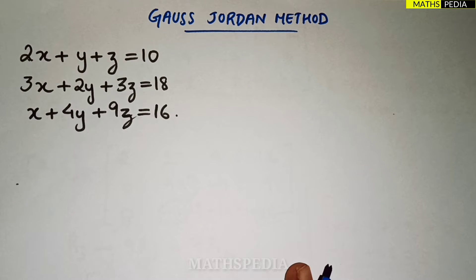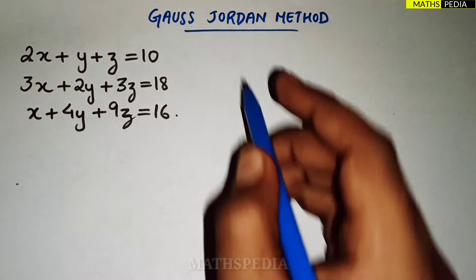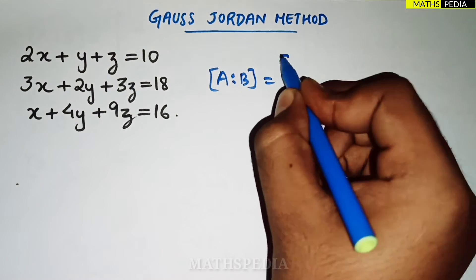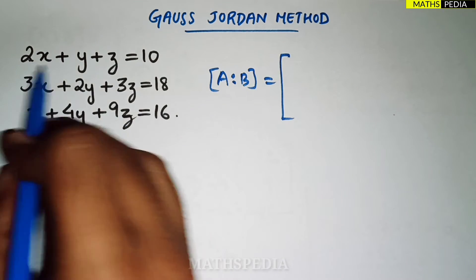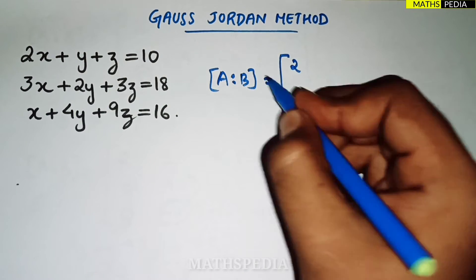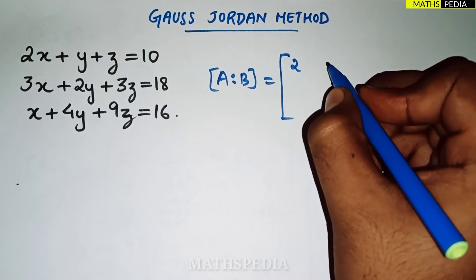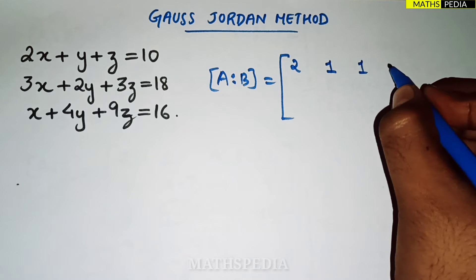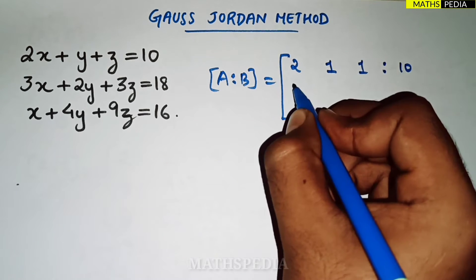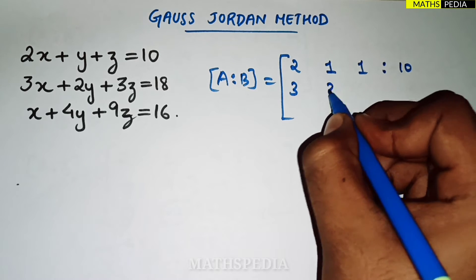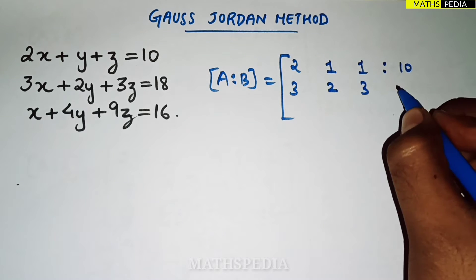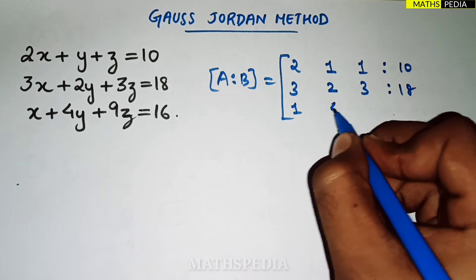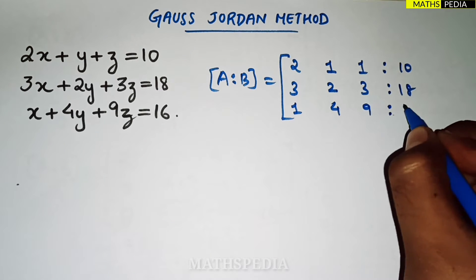The first step is to write the augmented matrix. Writing row-wise, the coefficients are: first row 2, 1, 1 | 10; second row 3, 2, 3 | 18; third row 1, 4, 9 | 16. I've now written the complete augmented matrix.